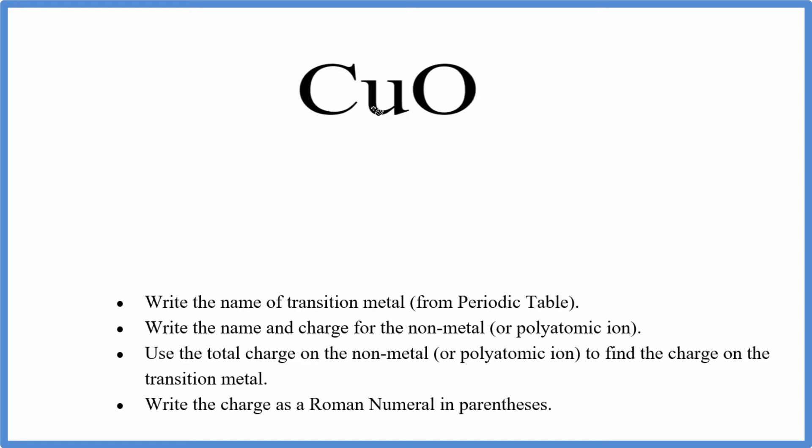We're going to write the name for Cu, which is copper, and then we're going to write the name for O, oxygen. Because it's ionic, for oxygen, we get rid of the end here, the YGEN, and write IDE.